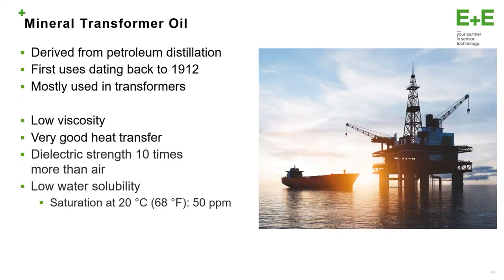Consider that a power transformer for generation step-up can contain 80,000 liters of oil or more. For this quantity of oil, we are talking about a price range of 200,000 euros for mineral oil. So the mineral transformer oil is the insulation fluid most used in this application. The mineral oil is derived from petroleum distillation — a material which has been present on the planet for millions of years. The properties of mineral oil include low viscosity, very good heat transfer, electric strength which is 10 times better than air, and very low water solubility — at just 20 degrees Celsius, this oil can contain only 50 ppm of water.